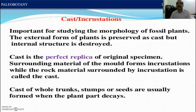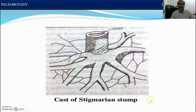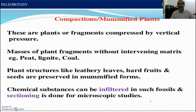Another type is cast or incrustation, important for studying the morphology of fossil plants. The external form of plant is preserved as cast but internal structure is destroyed. Cast is the perfect replica of the original specimen; the surrounding material of the mould forms incrustation, while the rock material surrounded by incrustation is called the cast. Cast of whole trunks, stems, or seeds are usually formed when the plant part decayed. This is a cast of a Sigillaria stem.